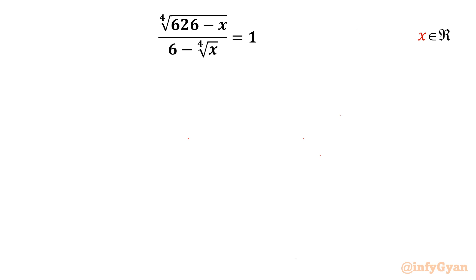Welcome to InfiGam, my dear friends. Today in this video we are going to take up one challenging radical equation problem. It is the 4th root of (626 minus x) over (6 minus 4th root of x) equal to 1, and we have to find out real solutions only.